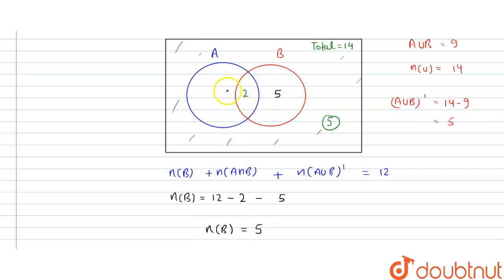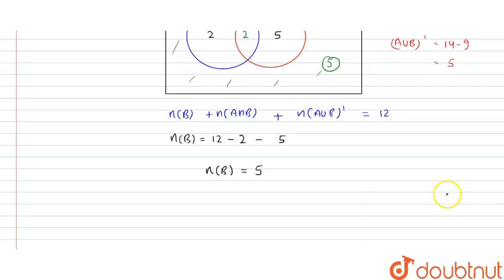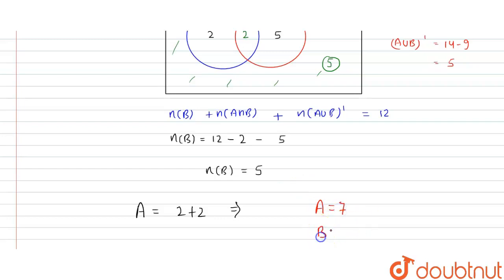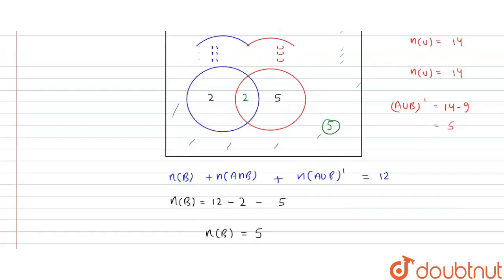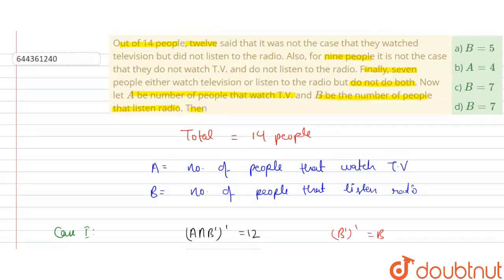Since A union B equals 9 and N(B only) equals 5 and N(A intersection B) equals 2, we get N(A only) equals 9 minus 5 minus 2 equals 2. Therefore A equals 2 plus 2 equals 4, and B equals 5 plus 2 equals 7. The final answer is A equals 4 and B equals 7, which corresponds to the correct option.